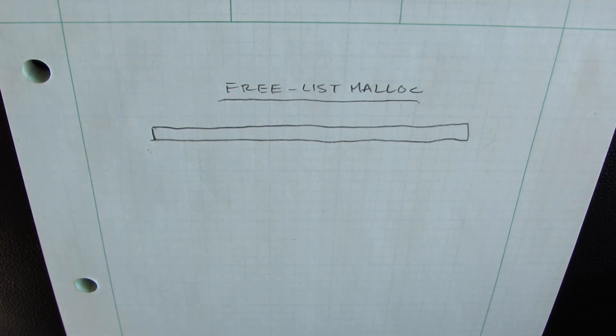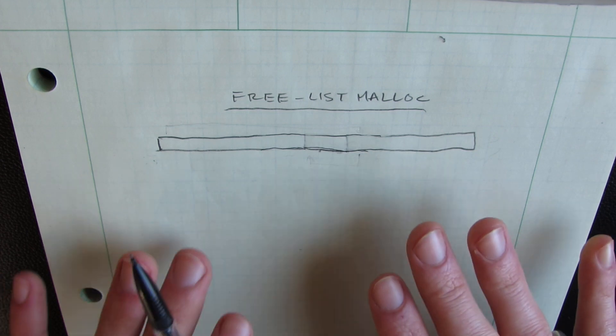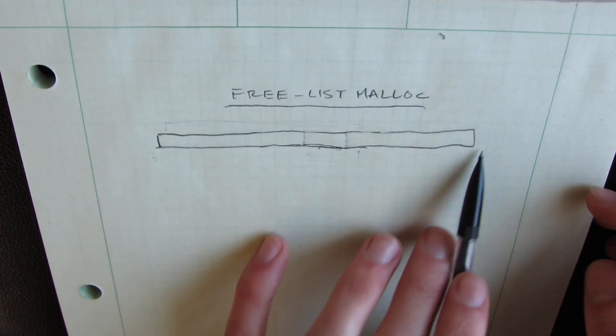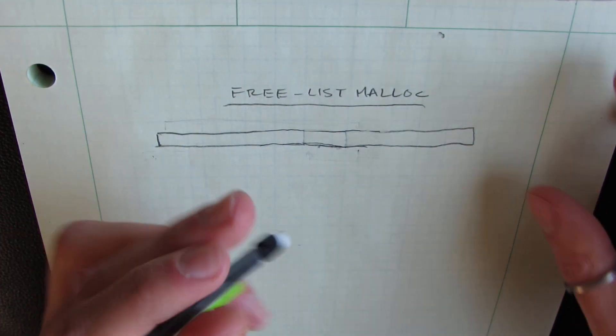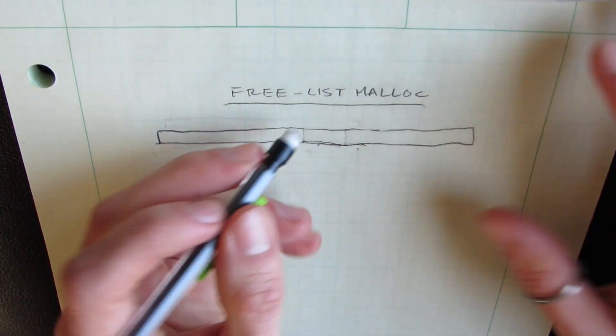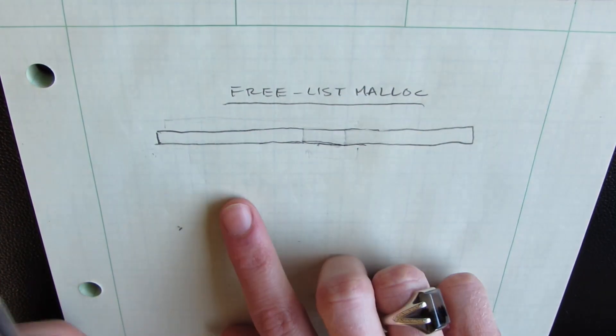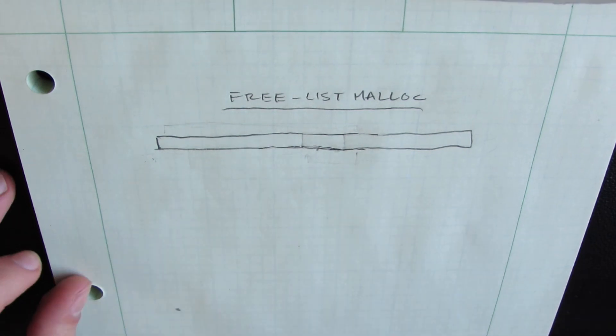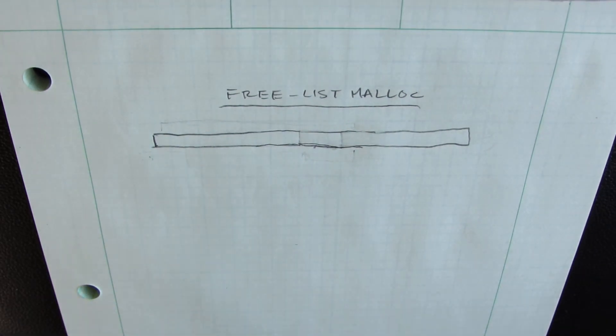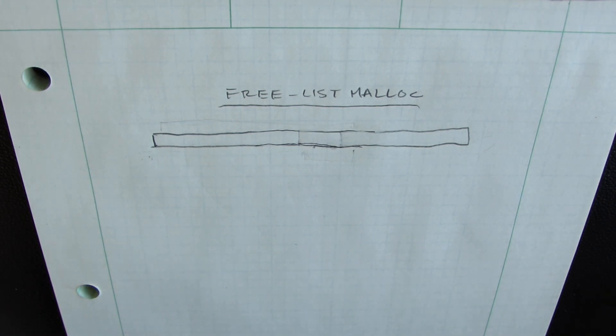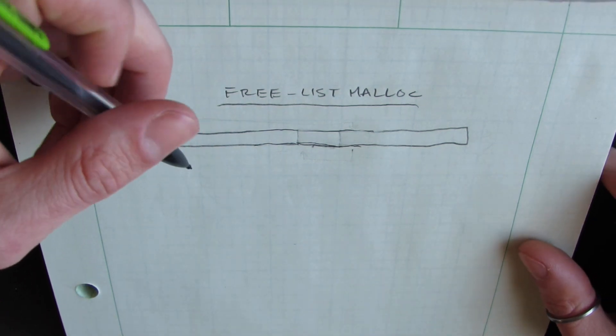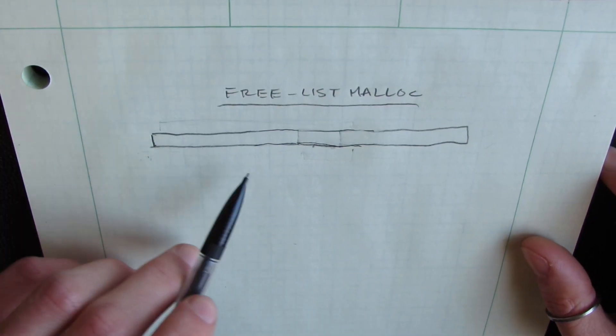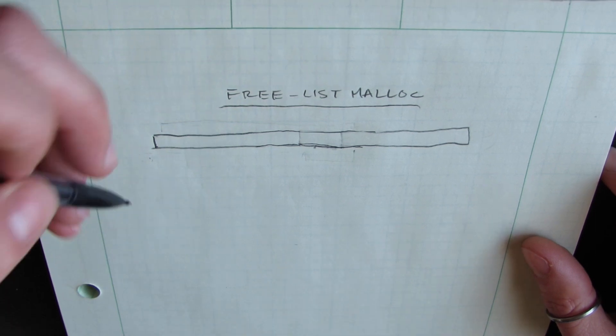So how do we divide this memory up so that we can actually create a linked list? Let's start off with a scenario where we just have one large chunk of memory here and not this block in the middle. We just have one large chunk of memory. In this case, we need to turn this large block of memory into a linked list node. And this is pretty easy to do and see. We can just set up some part of this memory as our linked list struct.